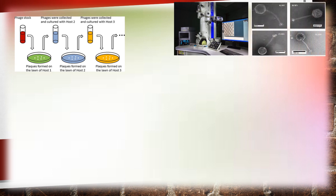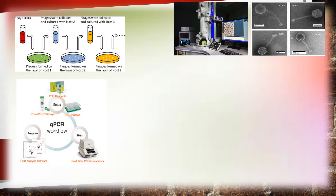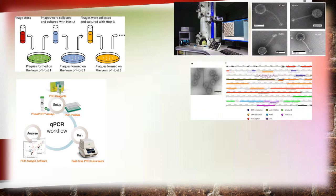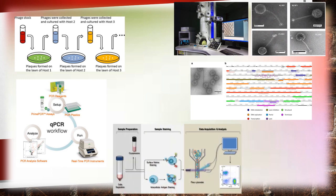Phage nucleic acid can be detected using quantitative PCR. Next generation sequencing enables the sequencing of the phage genome, which is essential to obtain a more complete understanding of their biology. Flow cytometry is used to identify and quantify the physical and chemical properties of phage particles, while mass spectrometry is used for identifying structural phage proteins.